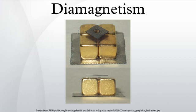Diamagnets were first discovered when Sebald Justinus Brugmans observed in 1778 that bismuth and antimony were repelled by magnetic fields. In 1845, Michael Faraday demonstrated that it was a property of matter and concluded that every material responded to an applied magnetic field. He adopted the term diamagnetism after it was suggested to him by William Whewell.